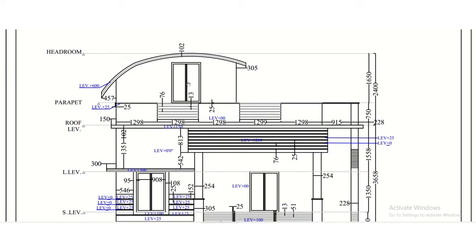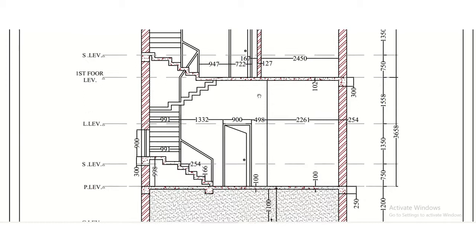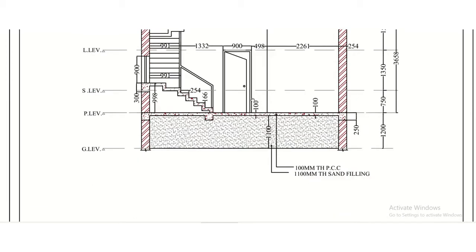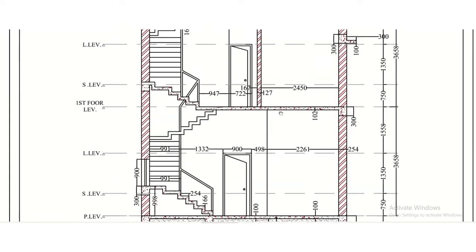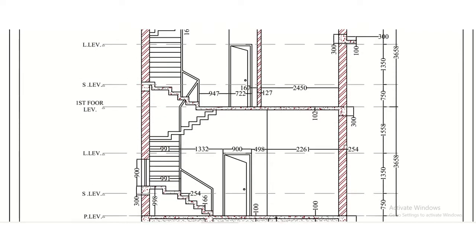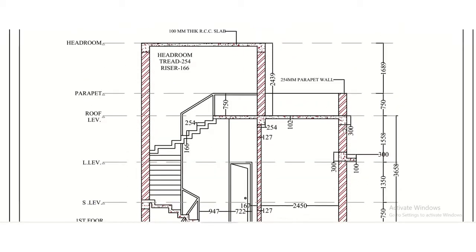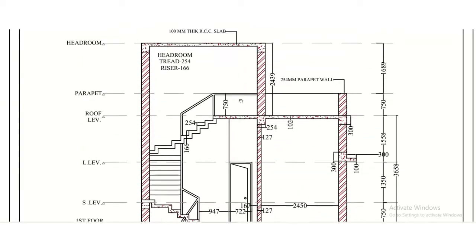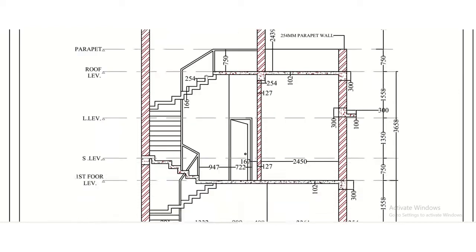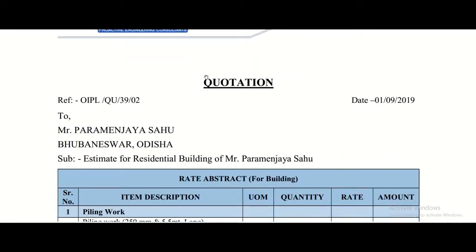This is the elevation corresponding to the 3D drawing. We also move towards the section, from which you can determine the levels of various elements such as the lintel level of doors, floor-to-floor heights, thickness of slabs, thickness of brickwork, and everything including the headroom. So this was our section.